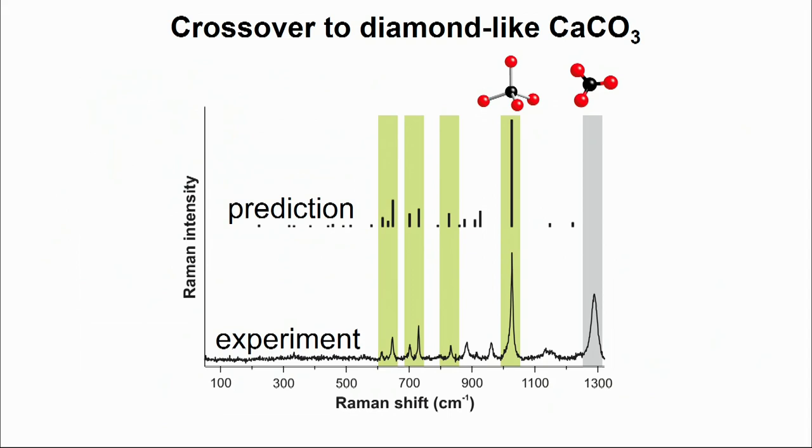Accordingly, one can think of this new high-pressure form of calcite as a diamond-like carbonate. The increase in coordination implies that there are new carbon-oxygen chemical bonds that are formed in the crystal structure. Accordingly, we use a technique called Raman spectroscopy, which is sensitive to these new chemical bonds.